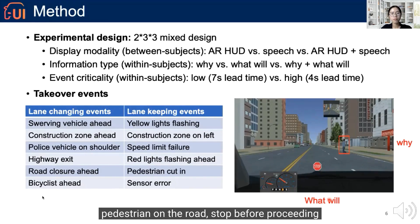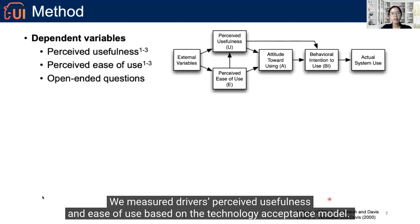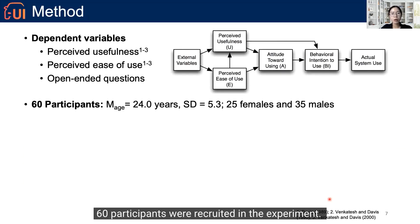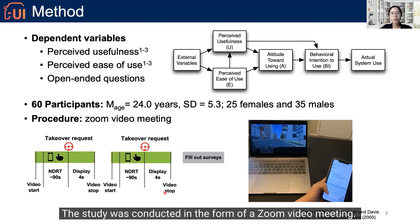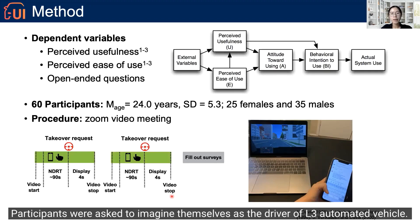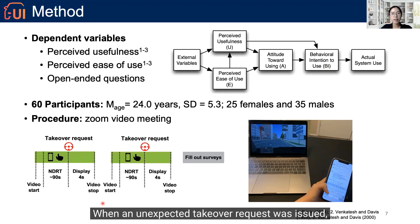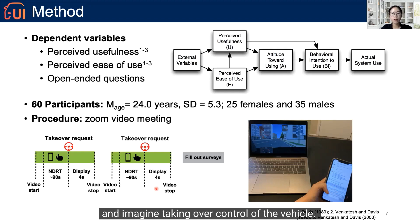Here is an example of the speech: 'Pedestrian on the road, stop before proceeding.' We measured drivers' perceived usefulness and ease of use based on the Technology Acceptance Model. We also asked participants an open-ended question on whether the display helped them take over and why. 60 participants were recruited. The study was conducted via Zoom. Participants were asked to imagine themselves as the driver of a Level 3 automated vehicle. When the vehicle was in automated driving mode, participants traded on their phone. When an unexpected takeover event was issued, participants should stop trading, look at the display, and imagine taking over control of the vehicle. Participants filled out the survey at the end of each block.